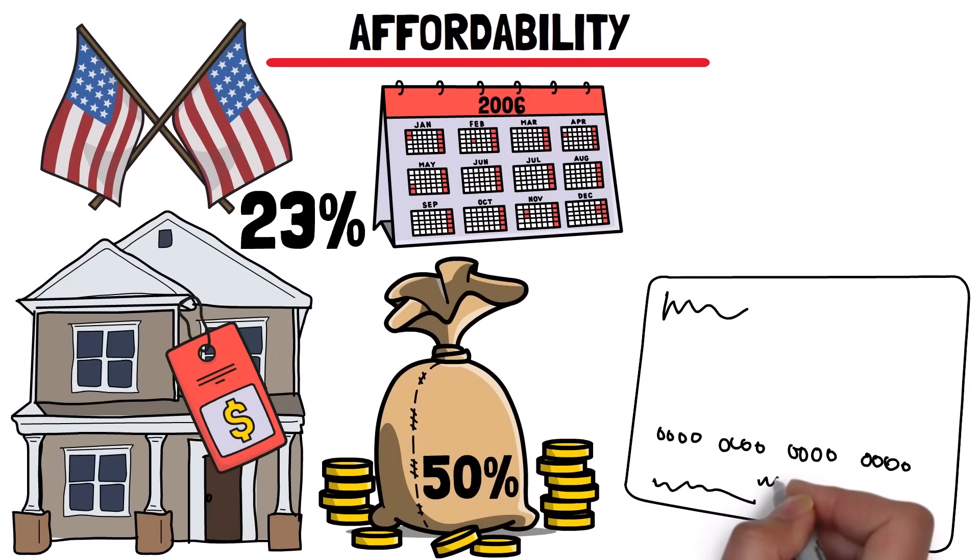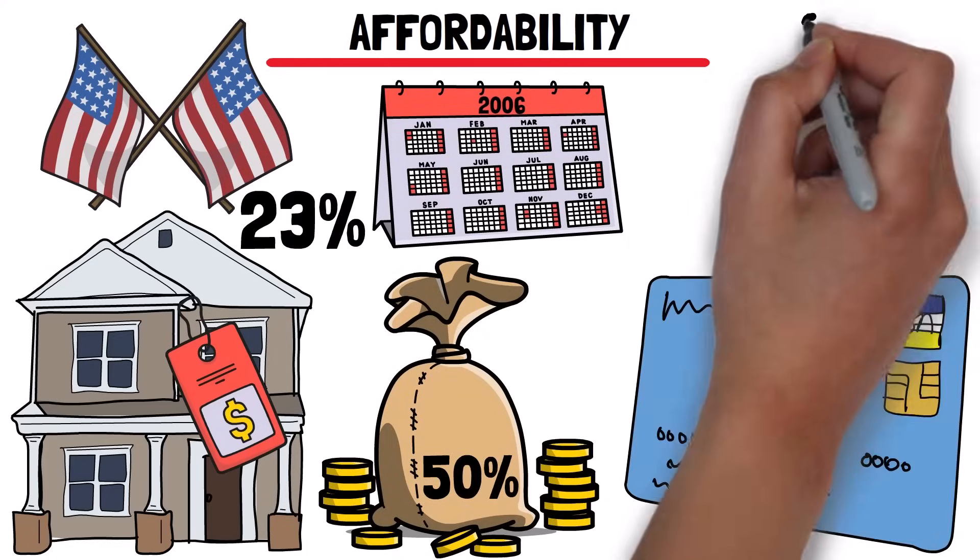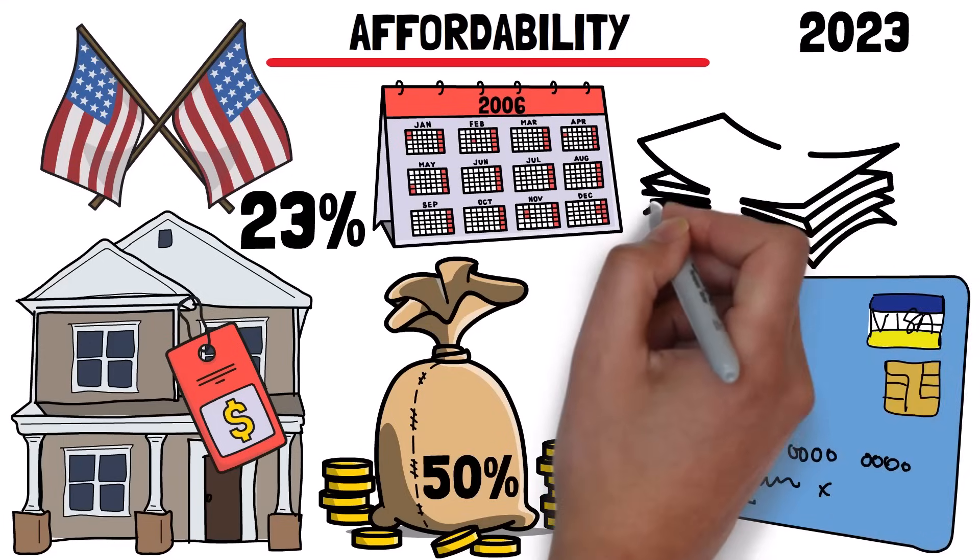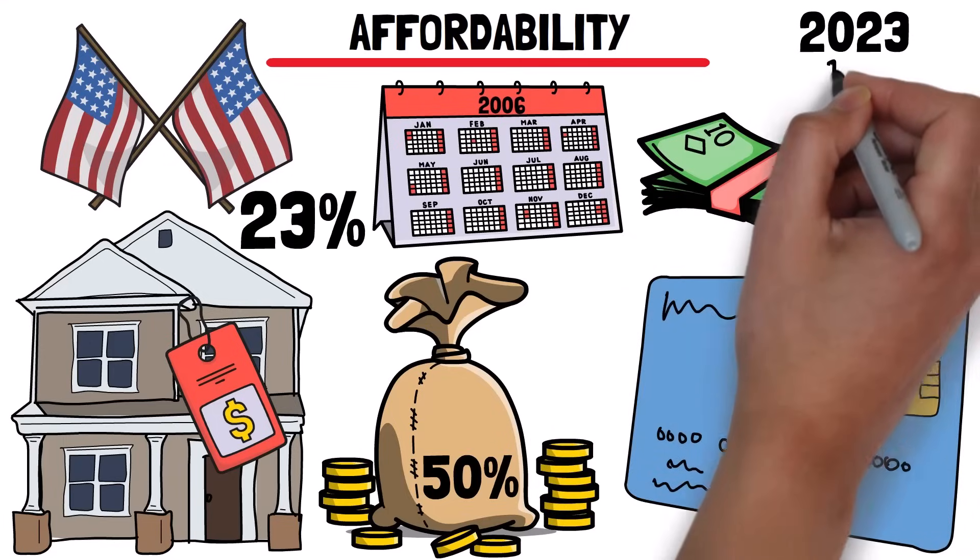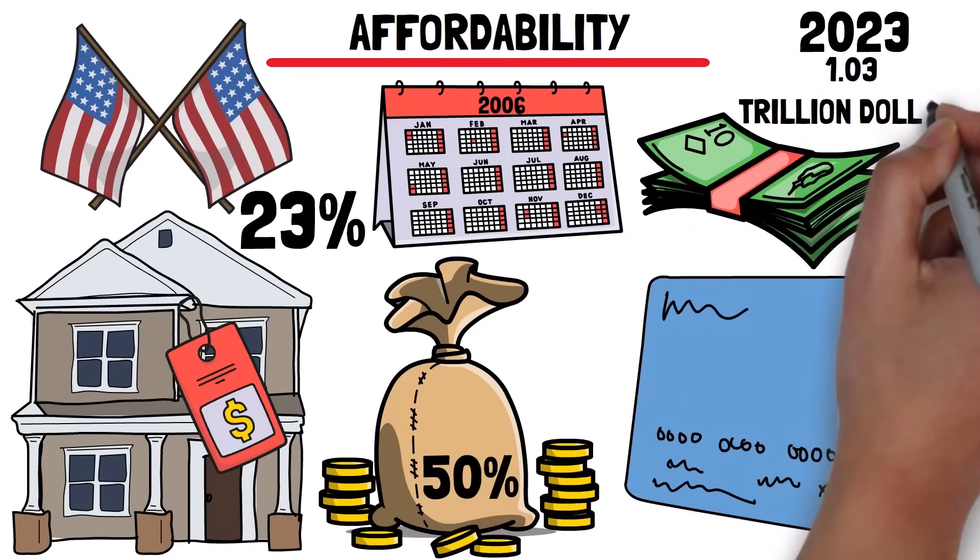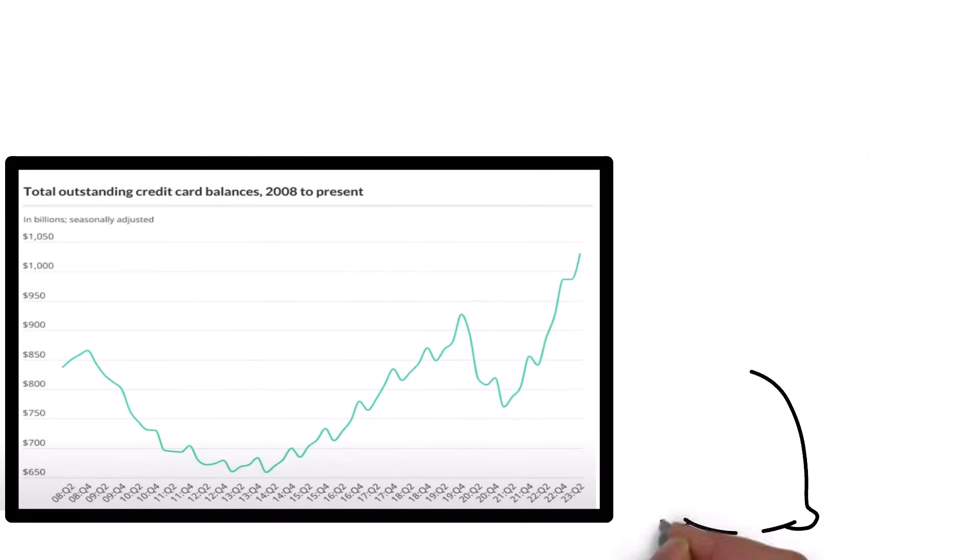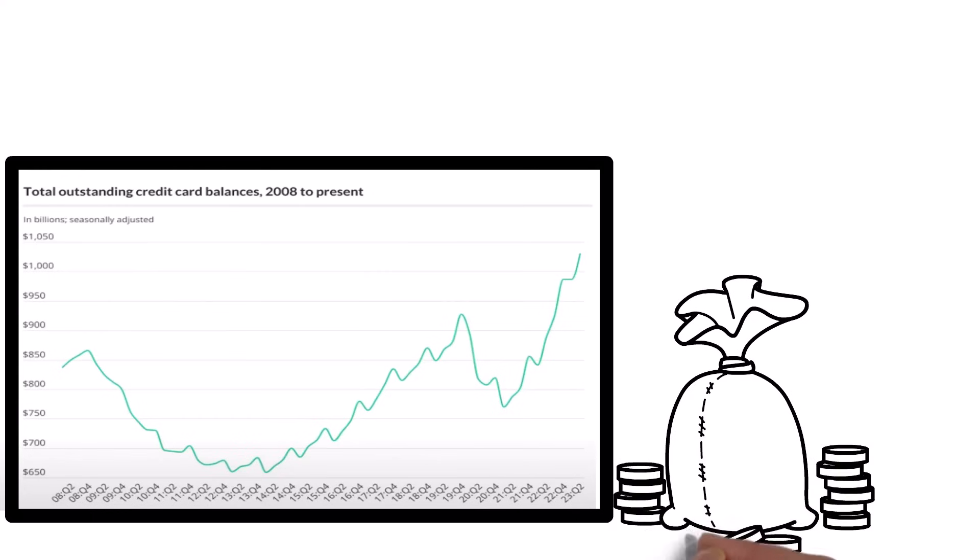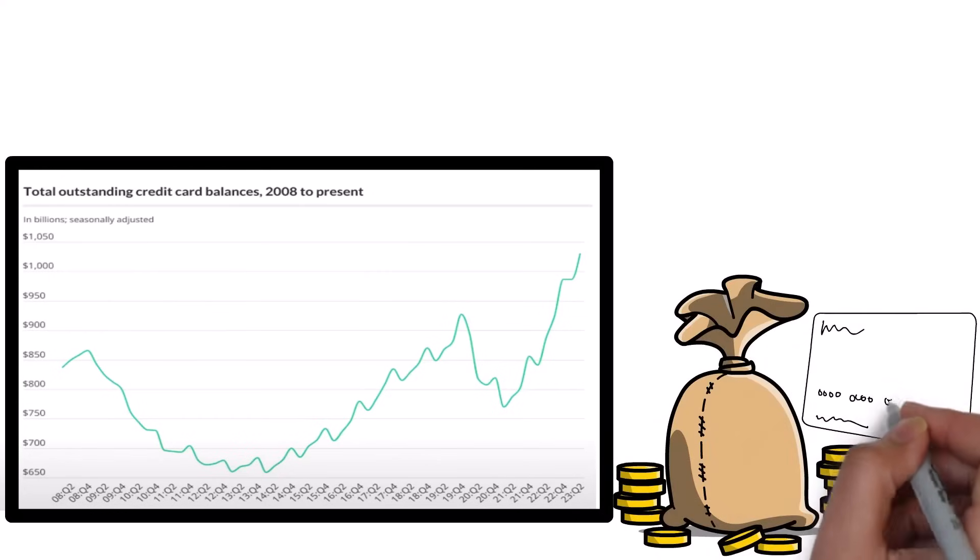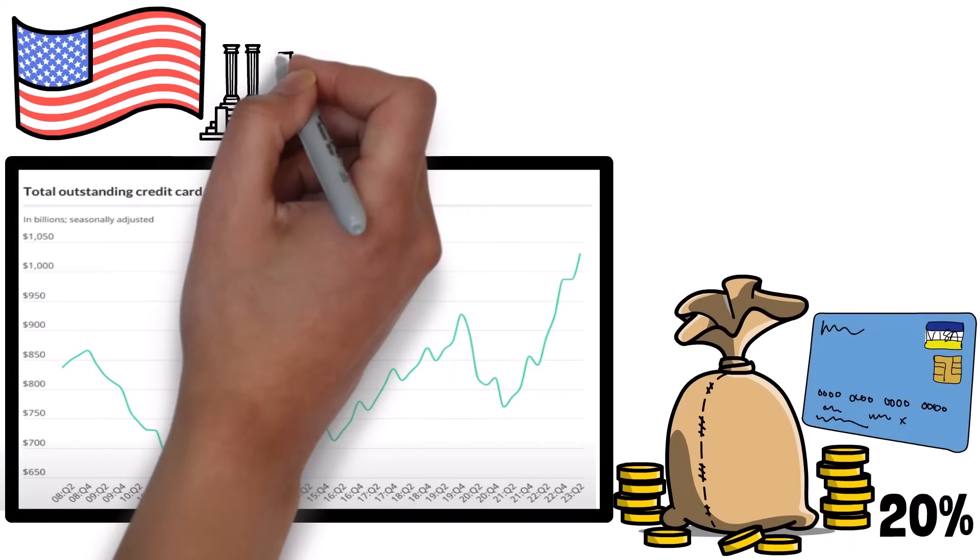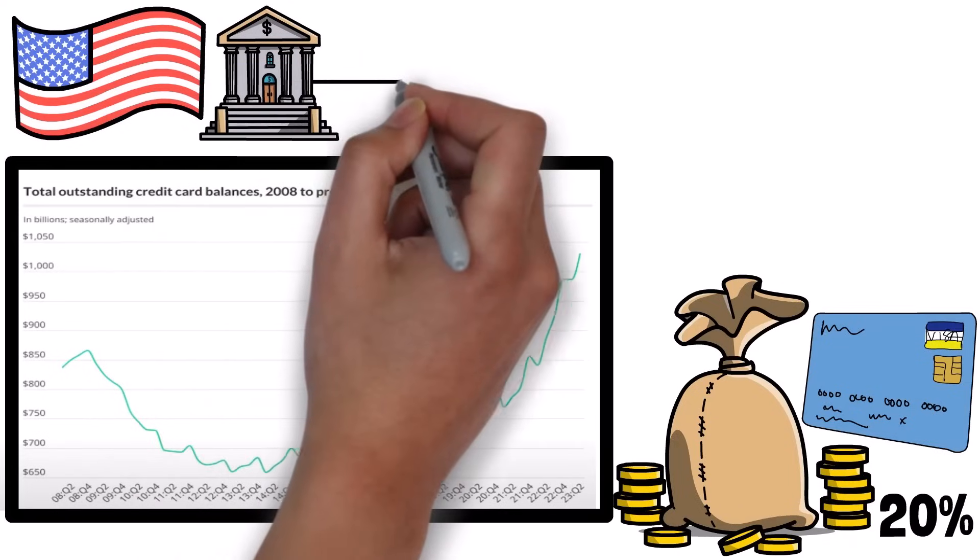Also, people owe more on their credit cards than ever before. By the middle of 2023, U.S. credit card debt had reached over $1.03 trillion. This graph shows that people are stretched thin with their money more than ever before. Having so much credit card debt makes it hard for about 20% of Americans to get a loan because they worry about how much debt they have compared to their income.